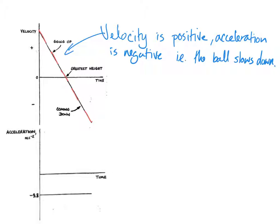Zero is the point where it changes from positive to negative, i.e. when it changes from going up to going down — zero is the greatest height. It's the idea of instantaneously stopping; it doesn't stay there, but it's got to change between a positive and a negative velocity, and it's got to pass through zero. That instant is its greatest height.